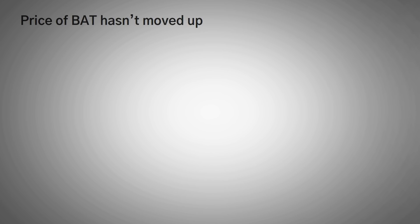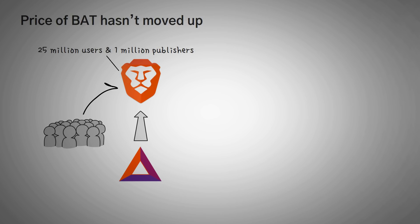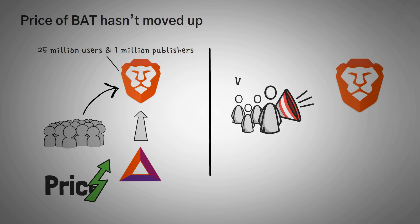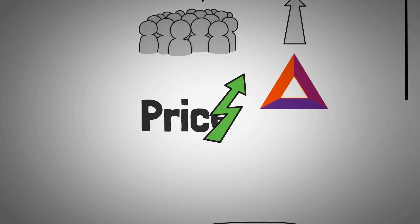Although the price of Basic Attention Token hasn't moved up in a while, there are a few factors to consider. The first factor is the project backing it — Basic Attention Token is supported by the Brave web browser, which currently has over 25 million users and 1 million publishers. With the solution that the browser offers, we will most likely see wider adoption in the future, which may positively affect the token's price. Many advertisers have welcomed Brave's approach with open arms, meaning the browser's advertising partners will continue to grow, likely increasing ad revenue converted to Basic Attention Token and boosting price growth and stability since the token has a finite supply.